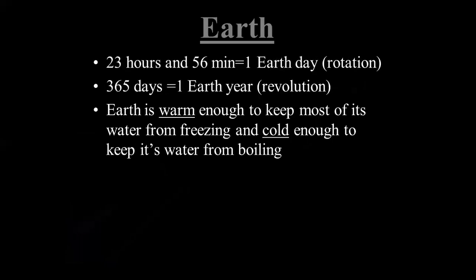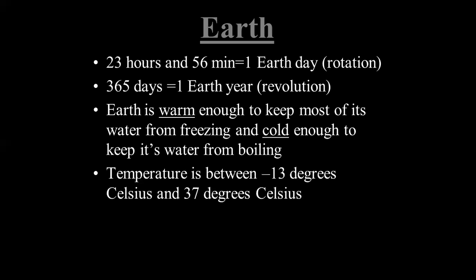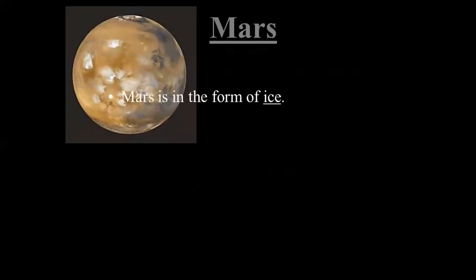Next is Earth. If we count on Earth, 23 hours and 56 minutes equals one complete spin, which equals one day. 365 days equals one Earth year, which is one revolution. Earth is warm enough to keep most of its water from freezing and cold enough to keep its water from boiling. Its atmosphere maintains these conditions. The normal temperature is 13 degrees Celsius to 37 degrees Celsius. Next planet is Mars.